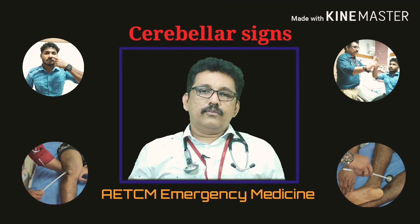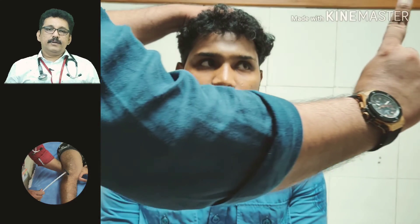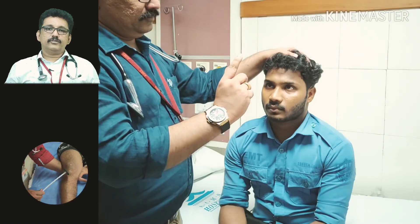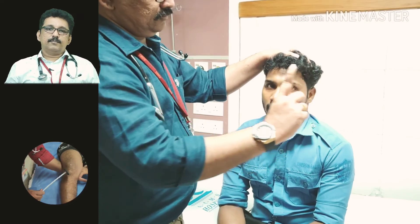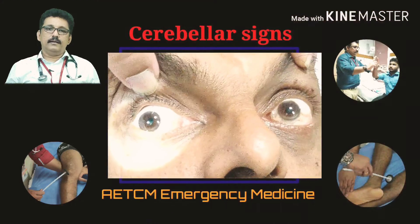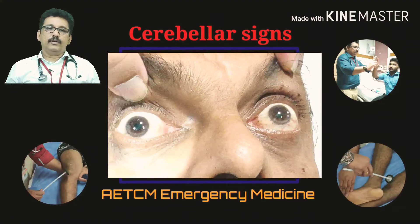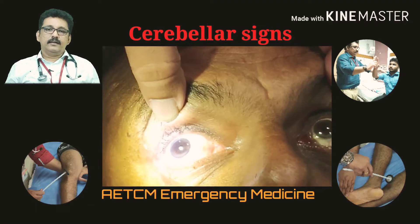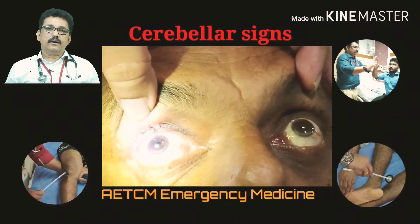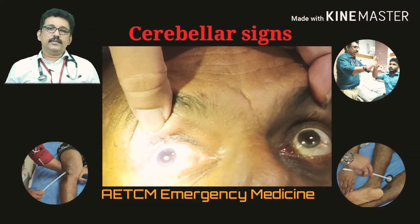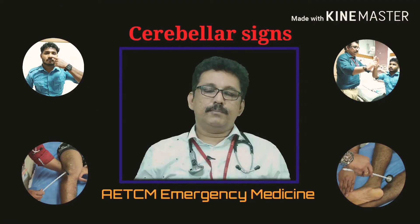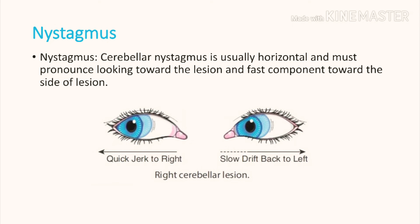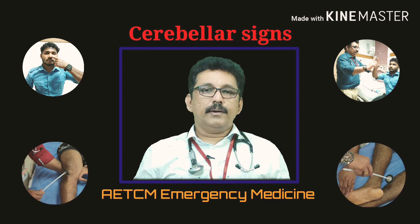The fourth sign is nystagmus. Ask the patient to look straight at your finger and slowly move it to the right, then left. With a right cerebellar lesion, you will see a quick jerk of nystagmus toward the right side and a slow drift back to the left. The quick jerk indicates the side of the lesion. Horizontal nystagmus on the side of the lesion is the fourth clinical finding in cerebellar disorder.